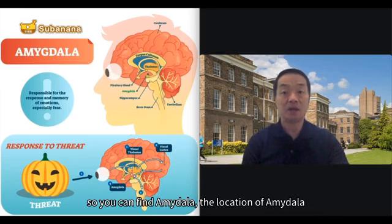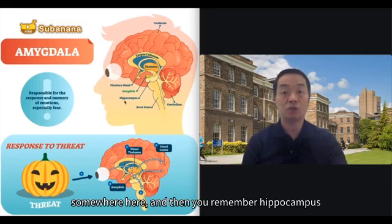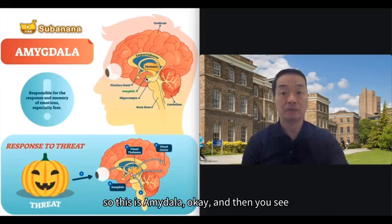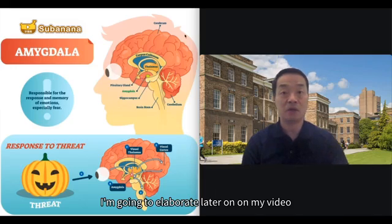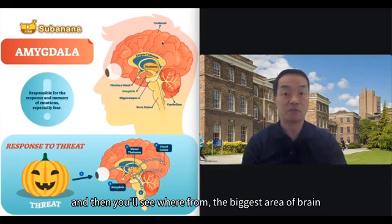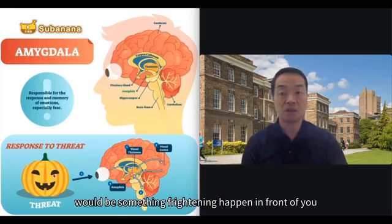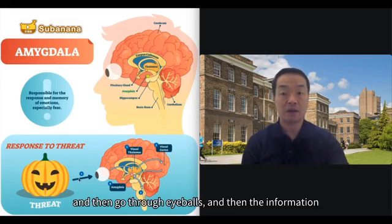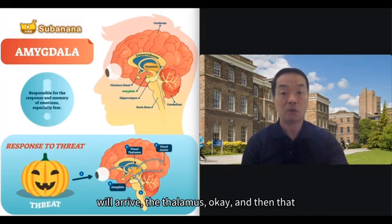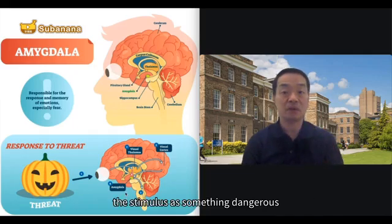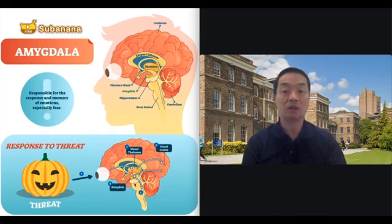You can find the amygdala here on the diagram, and hippocampus — which will be our next topic — is also labeled here. When something threatening happens in front of you, the information goes through the eyeballs, then arrives at the thalamus, and then goes directly to the visual cortex. You interpret the stimulus as something dangerous, and that triggers the amygdala to react.